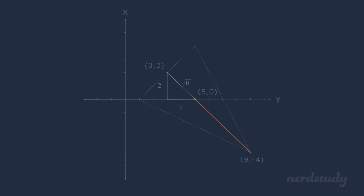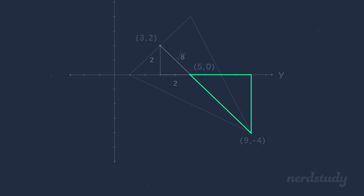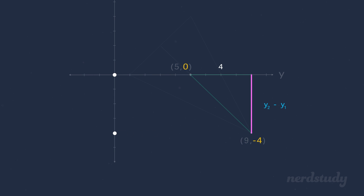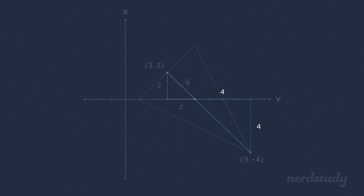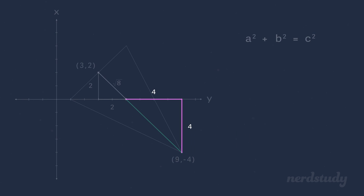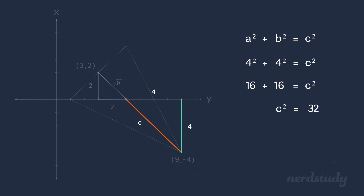Now, what about this other part here? Well, we can do the exact same thing and find the right triangle within this segment. x2 minus x1 for this is 9 minus 5, which equals 4. y2 minus y1 is -4 minus 0, which equals 4 units of length. So if we plug these values into the Pythagorean theorem, we get 4 squared plus 4 squared equals c squared. Simplifying gives us 32 equals c squared, so c equals square root of 32.